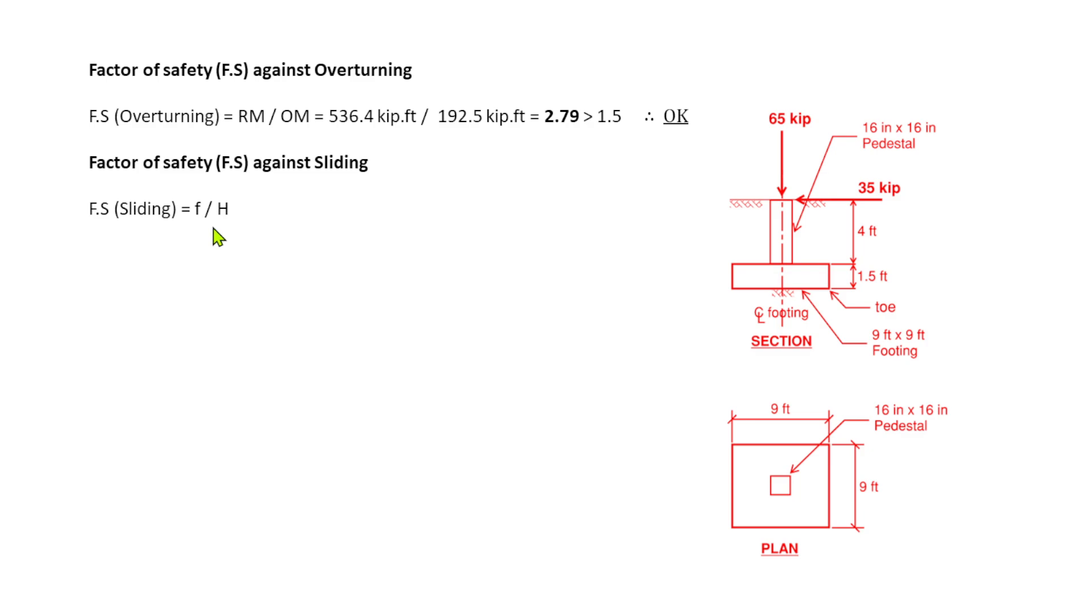So we need to determine the factor of safety against sliding, and the formula is equal to F over H. F is the frictional force which is always against the lateral load. Our frictional force here at the base of the footing is opposite to the direction of 35 kips. Now we will calculate what is that frictional resisting force. The frictional resisting force at the base of footing is F equals mu R. Mu is the coefficient of friction between concrete and the soil. We are given that 0.5 times R, which is the total resisting load. So it's equal to 0.5 times 119.2, that would give us 59.6 kips.